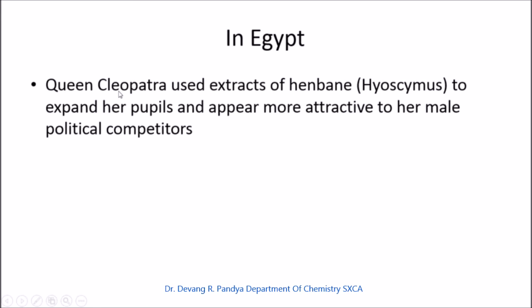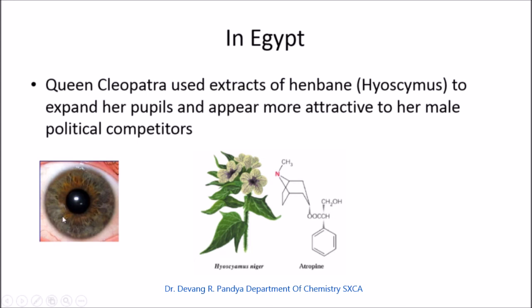In Egypt, Queen Cleopatra used extracts of henbane (Hyoscyamus niger) to expand her eye pupils and appear more attractive to her male political competitors, demonstrating that the political use of alkaloids dates back to ancient times. She used the alkaloid atropine or hyoscine for this purpose.